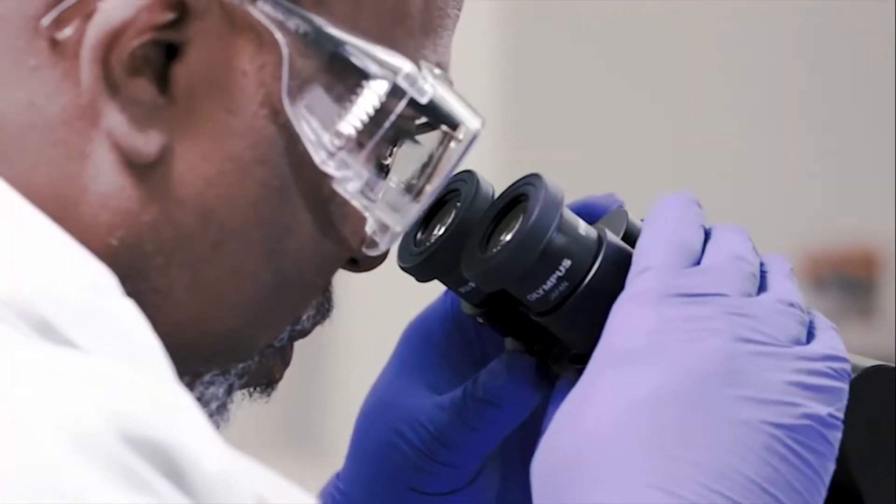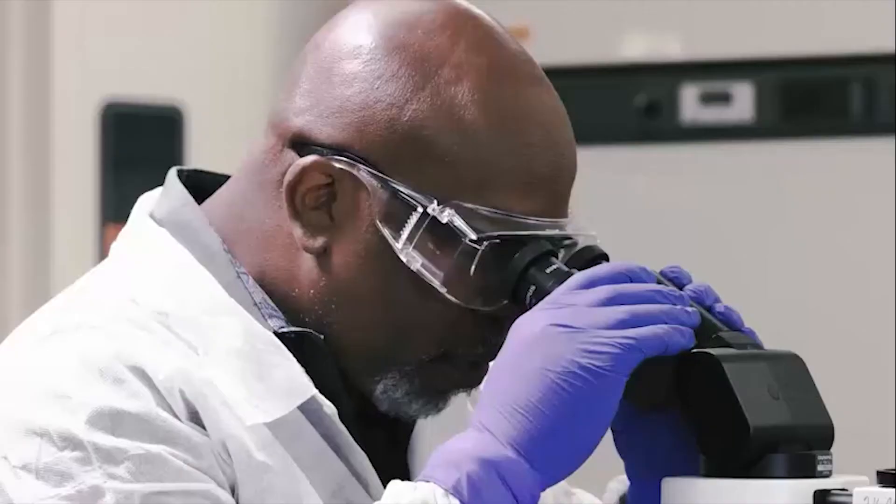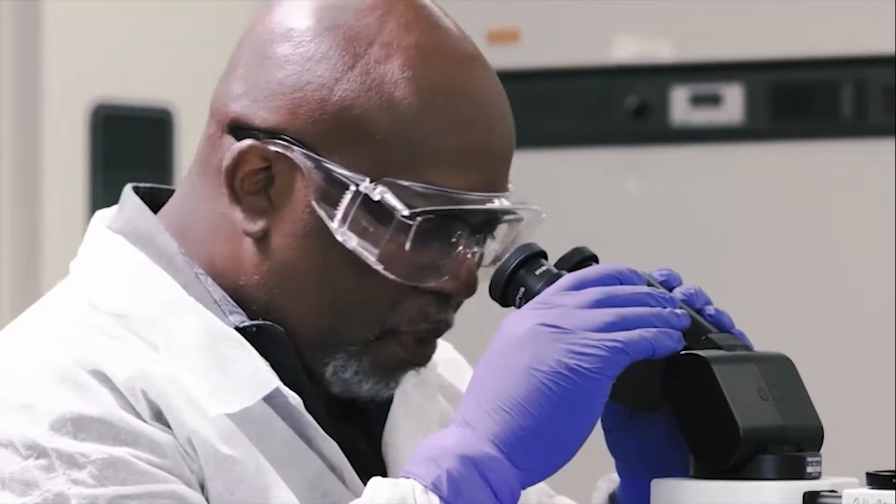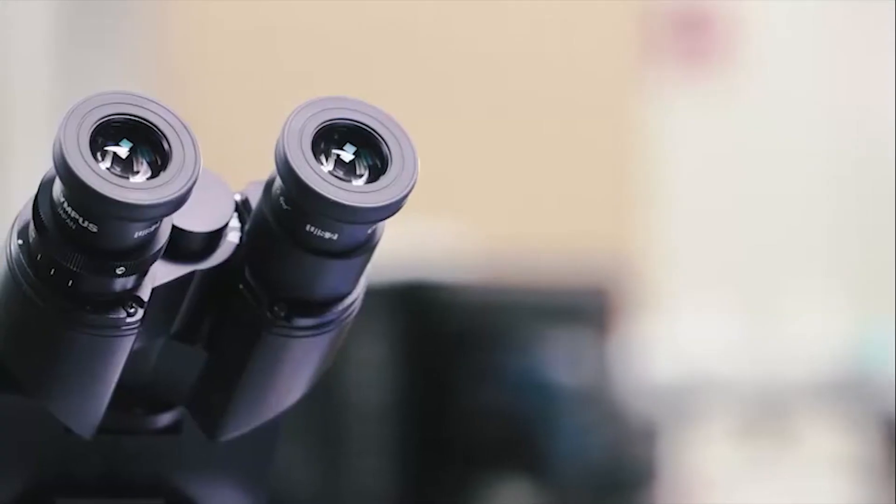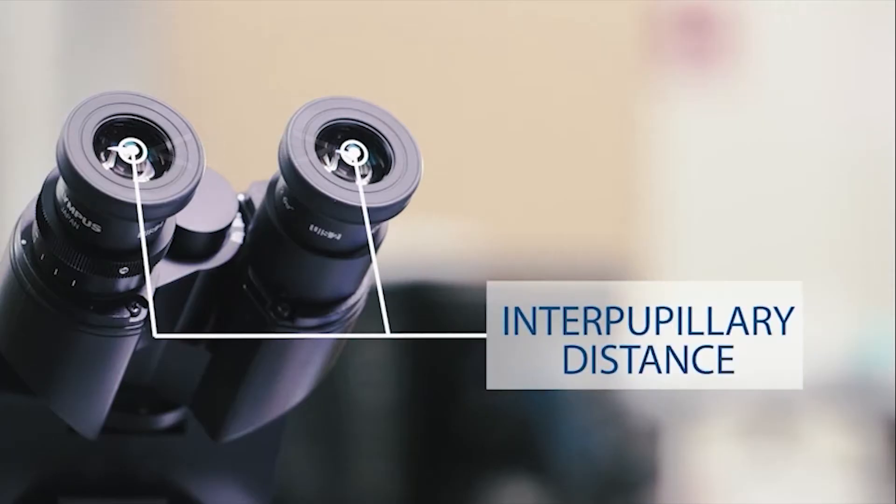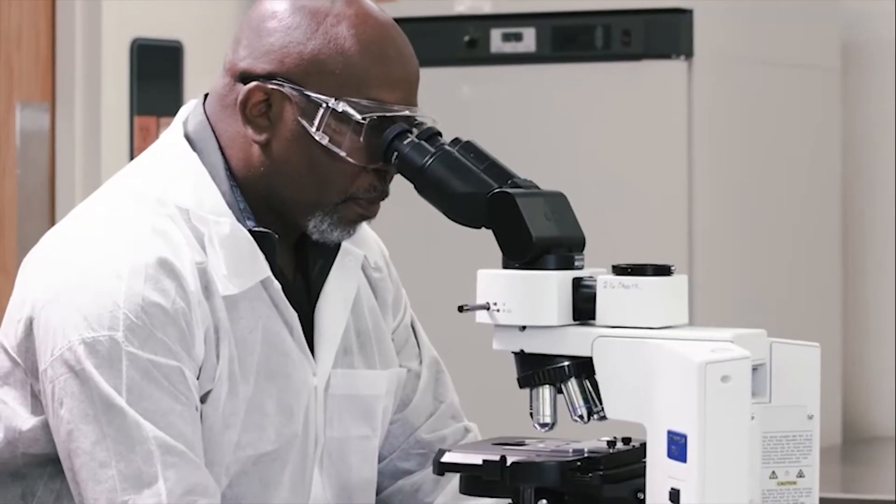In most microscopes, they are binocular. You can adjust the eyepieces to match the distance between your eyes, known as interpupillary distance, so that you can see one image. It is important to look at the image under the microscope with both eyes because it improves the field of view.